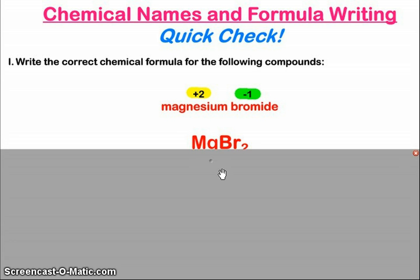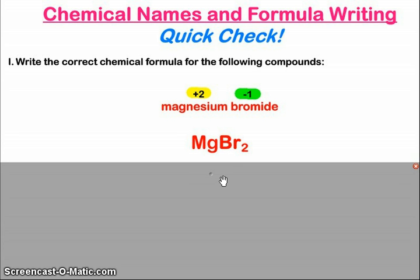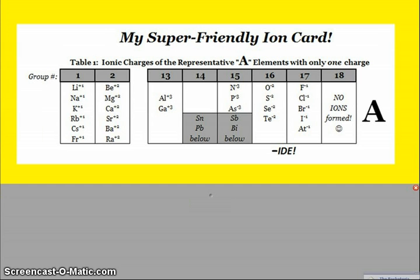So our first one, magnesium bromide. When I look to my friendly ion card, I will find magnesium is plus two and bromide is minus one. Again, I find this on my super friendly ion card. And you can see there that magnesium is a plus two ion, bromide is a minus one ion. That's where I found that information.